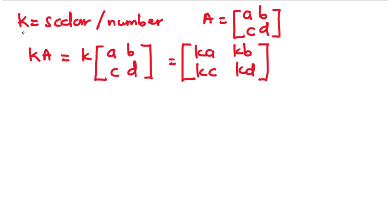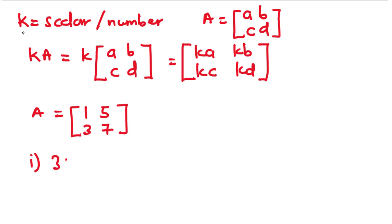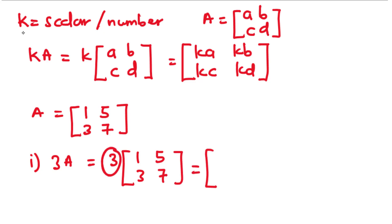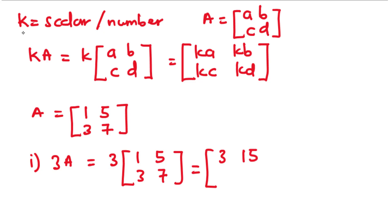Now let's take an example. Given that matrix A is equal to [1, 5, 3, 7], let's find the matrix 3A. So basically we are going to multiply each element of the matrix by 3. So we have 3 times the matrix [1, 5, 3, 7], and that is equal to 3 times 1 = 3, 3 times 5 = 15, 3 times 3 = 9, and then 3 times 7 = 21.